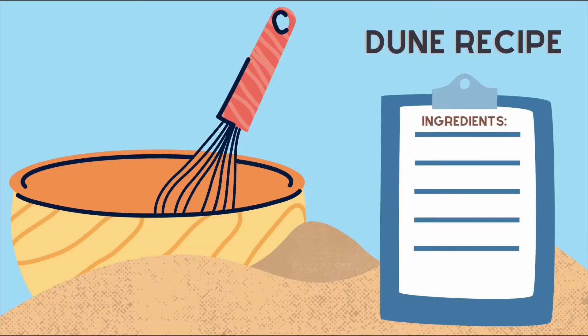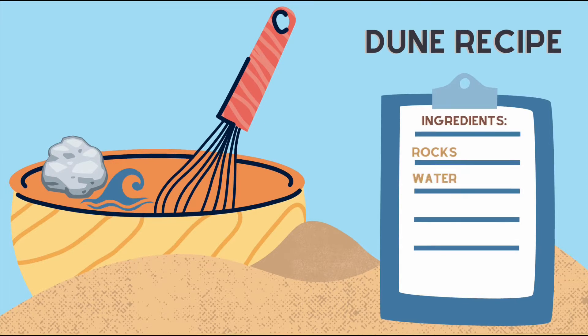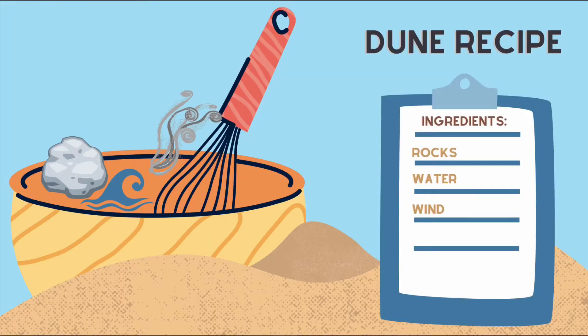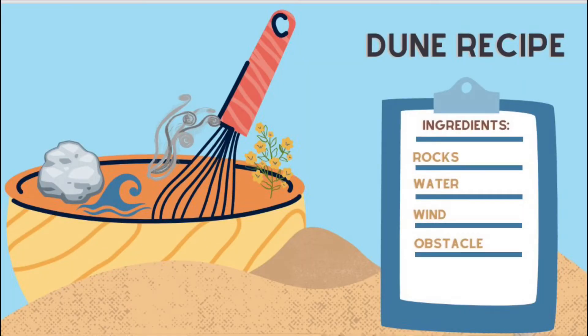So if we were to make a recipe for a sand dune, we would need those rocks that roll down the river from the mountains. We would need water — both the river that carries our sand particles into the ocean and those longshore currents. We would need wind, that really strong wind blowing from the ocean, picking up that dry sand and pushing it into the sand dunes. And of course, we would need that obstacle, that plant or existing dune.